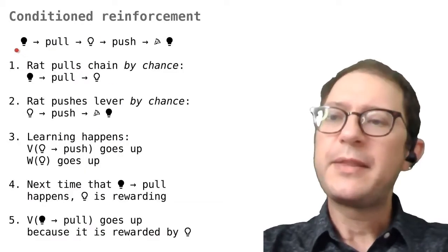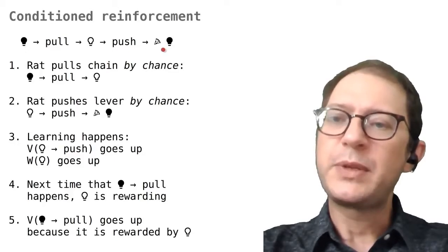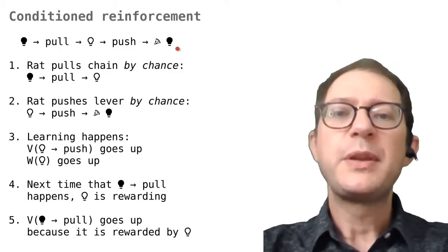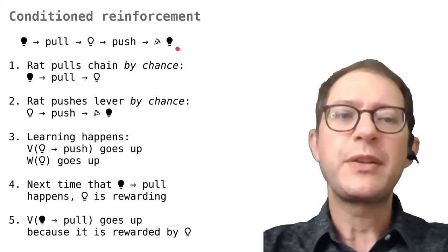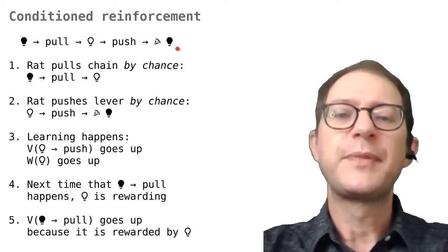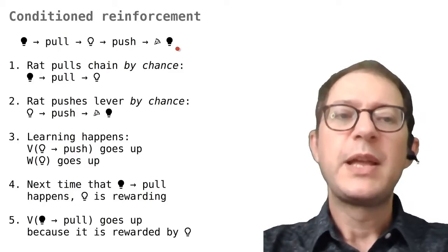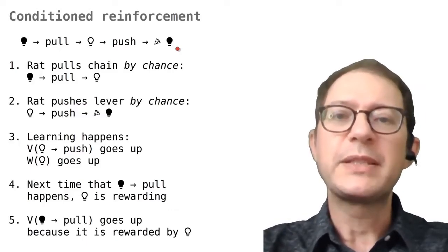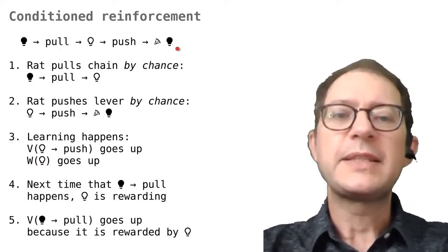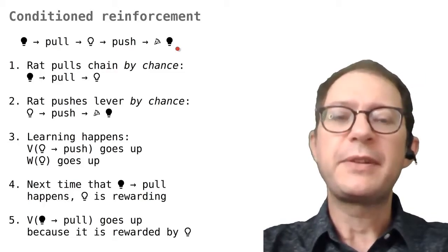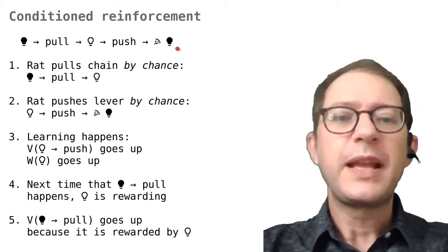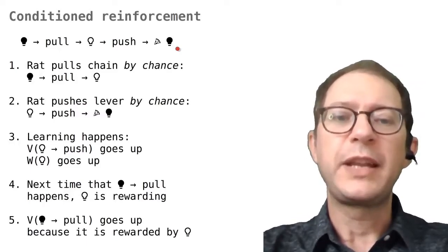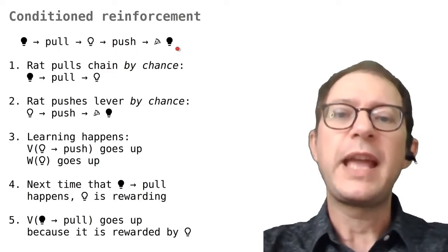Let's see how that would work. At the top we have the sequence that needs to be learned. At some point the rat can pull the chain just by chance because it is hungry and exploring the environment to see how to get food. When the rat pulls the chain the light goes on, but because seeing the light on is not rewarding, the rat does not learn anything from this experience. Suppose now that the rat is lucky and pushes the lever when the light is on — this gives food. At this point, learning happens, and two things will actually occur.